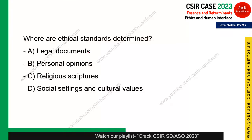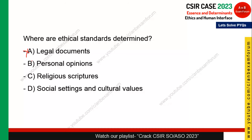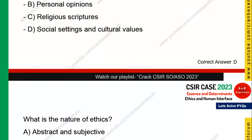Next question: where are ethical standards determined? There is no standard legal document describing what is ethical. Personal opinion is also not a standard. Religious scriptures tell us about ethical behavior but provide no formal standards. Social setting and cultural behavior is the right answer. Social setting and cultural value is one of the key determinants — the factors which determine ethical behavior. Option D is the correct answer.